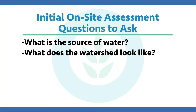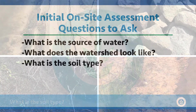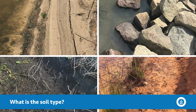The next thing to look for around that pond or lake system is the soil type. Is it real organic — peat, moss, mucky organic? Or is it more sandy, silty, clay, or rocky around the system?